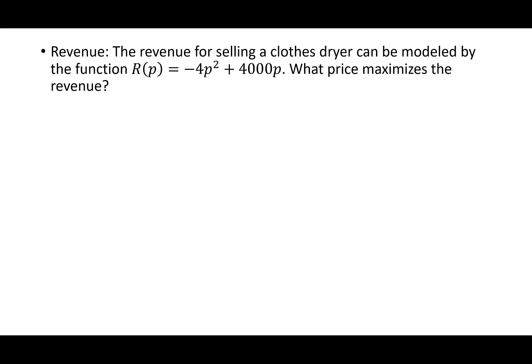This one's an application. It says the revenue for selling a clothes dryer can be modeled by the function R(p) = -4p² + 4000p. We want to know what price maximizes the revenue. This p instead of the x that we usually have doesn't make any difference. We're going to treat it the same way. We're still going to do -b/2a. So the b is 4000. So I have -4000 over 2 times a. a was -4. I have -4000 over -8. Negative negative is positive, and I get 500. We've answered the question. That's all it asked for was the price. This price, 500, that is our maximum.